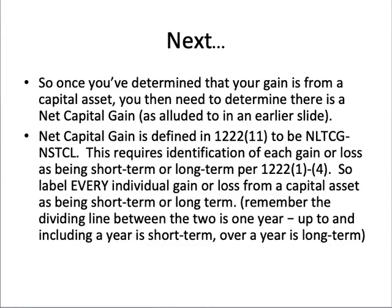Once you've determined that there is a capital asset and that is what the gain is from, you have to determine whether or not there is a net capital gain. The net capital gain defined in §1222(11) is net long-term capital gain minus net short-term capital loss. This does require each and every gain or loss from property to be identified as either short-term or long-term, pursuant to §1222(1) through (4). So you would label every single gain or loss from a capital asset — short-term is up to and including a year, long-term is over a year. Imagine putting labels on every single asset: this is a short-term gain, this is a short-term loss, this is a long-term gain, this is a long-term loss.